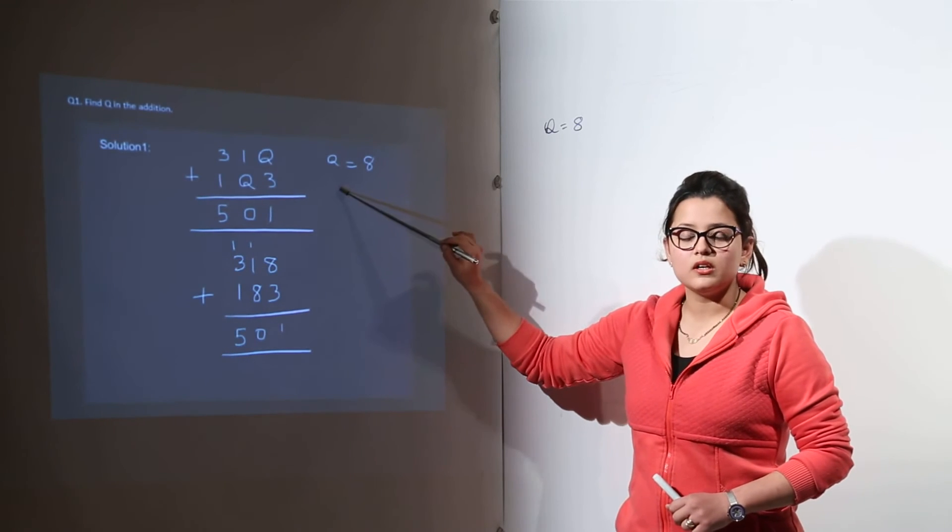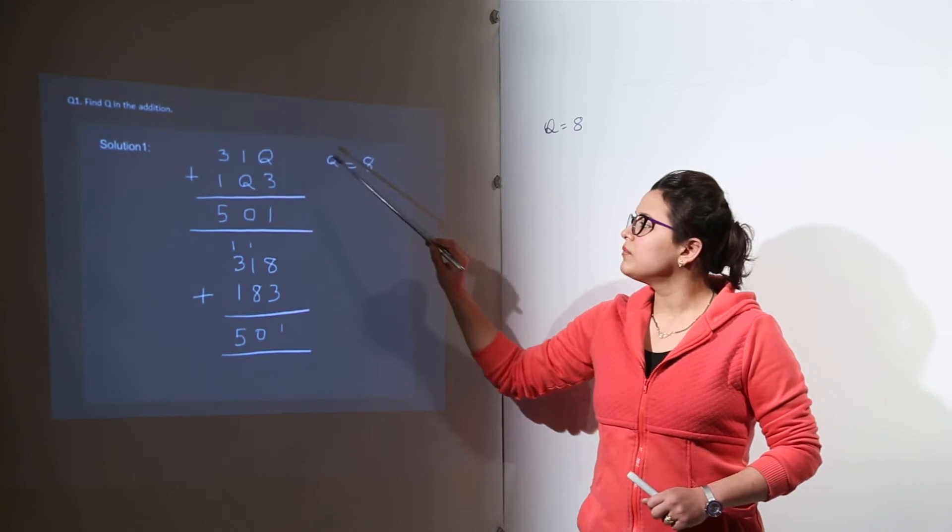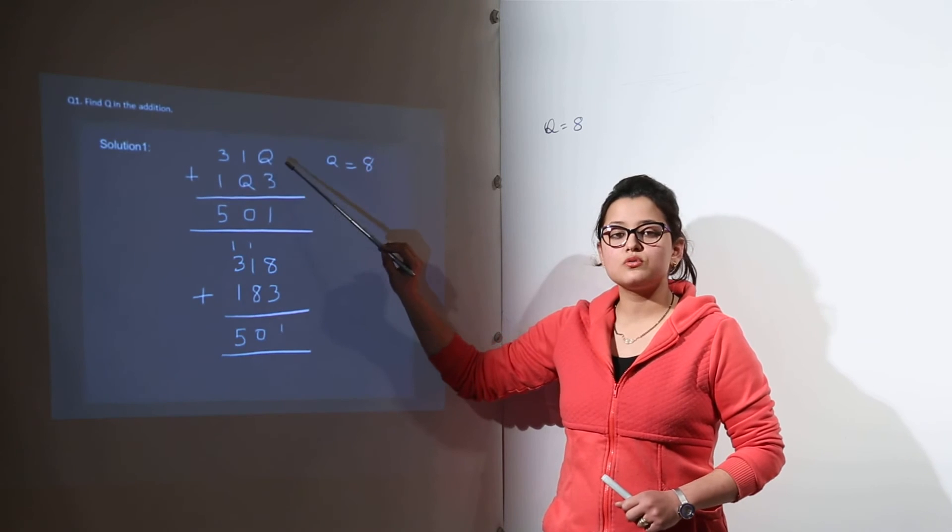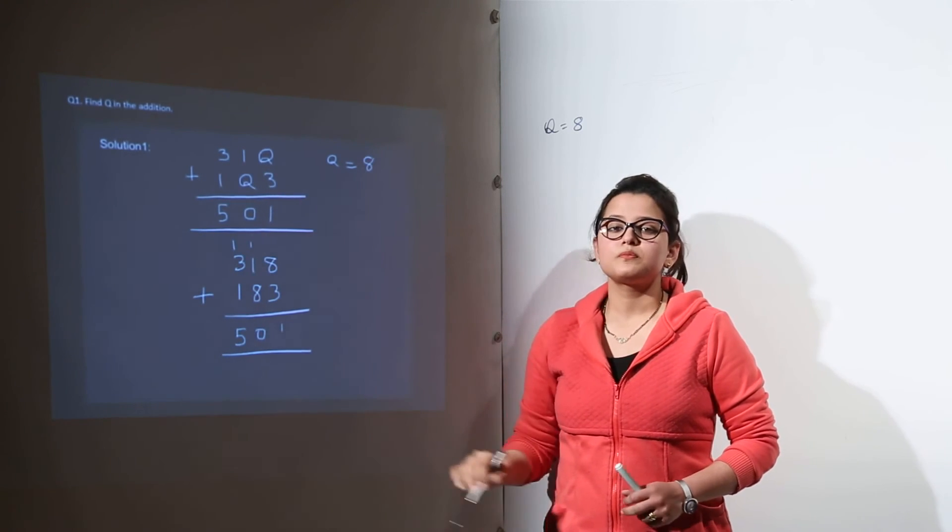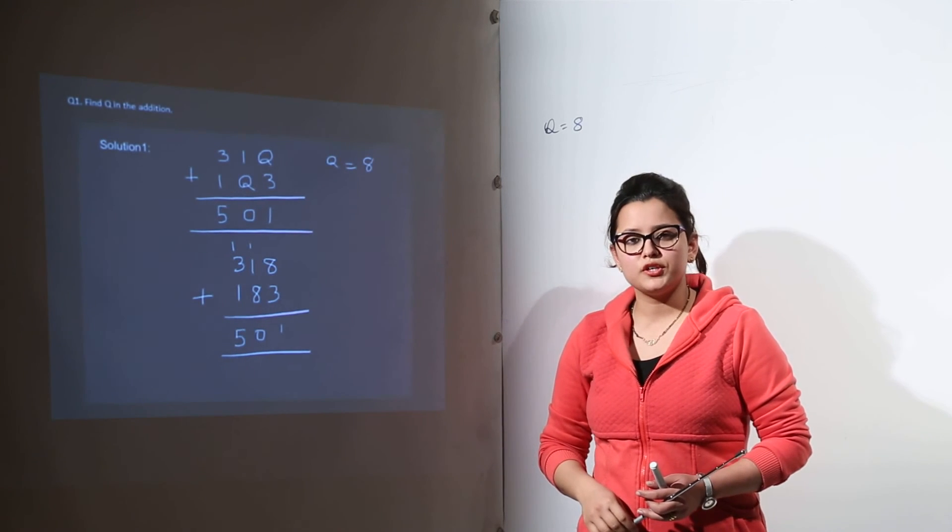Because here the q has to have a value which is satisfying this sum. So that is how you can calculate the values for q.